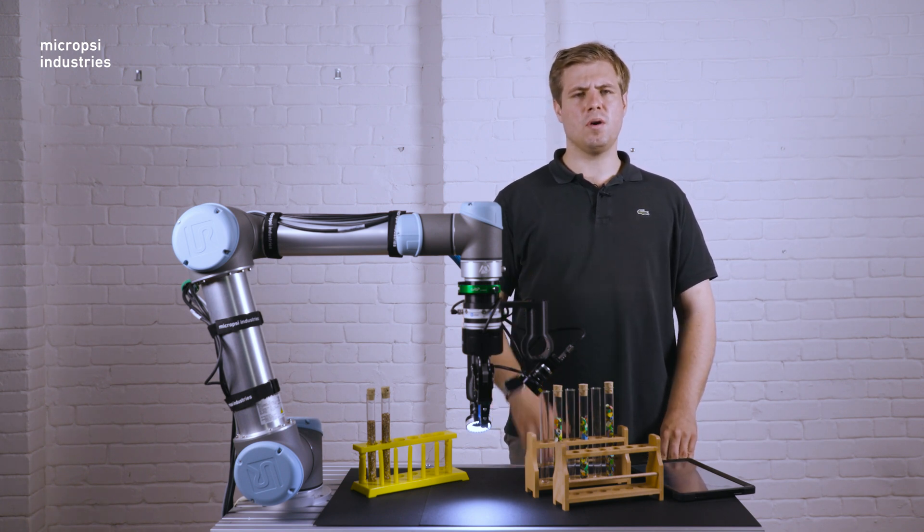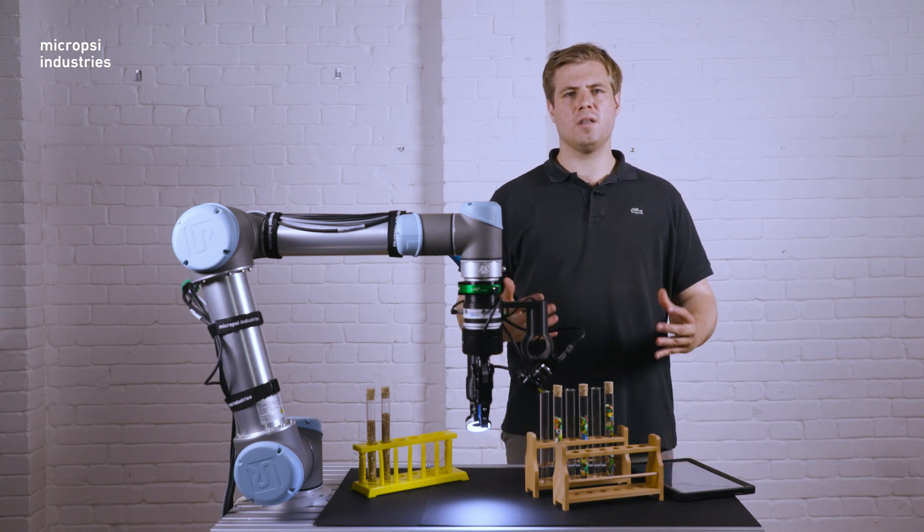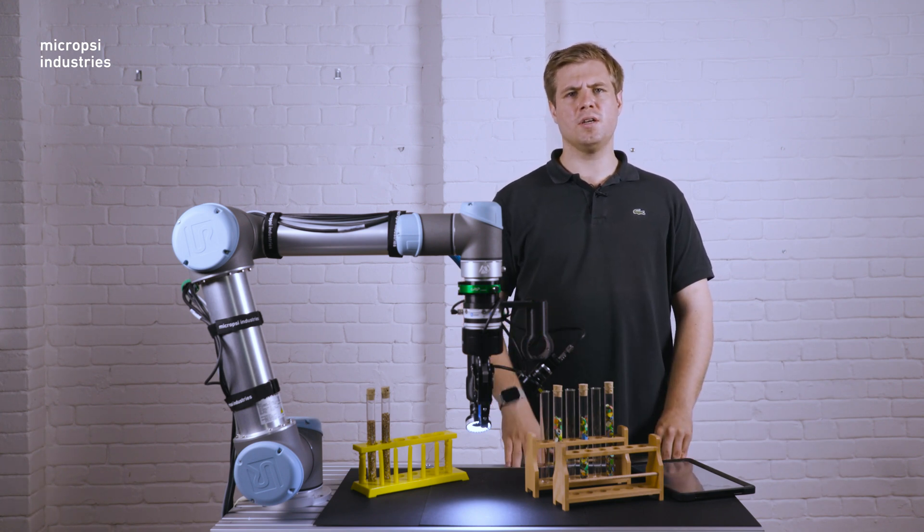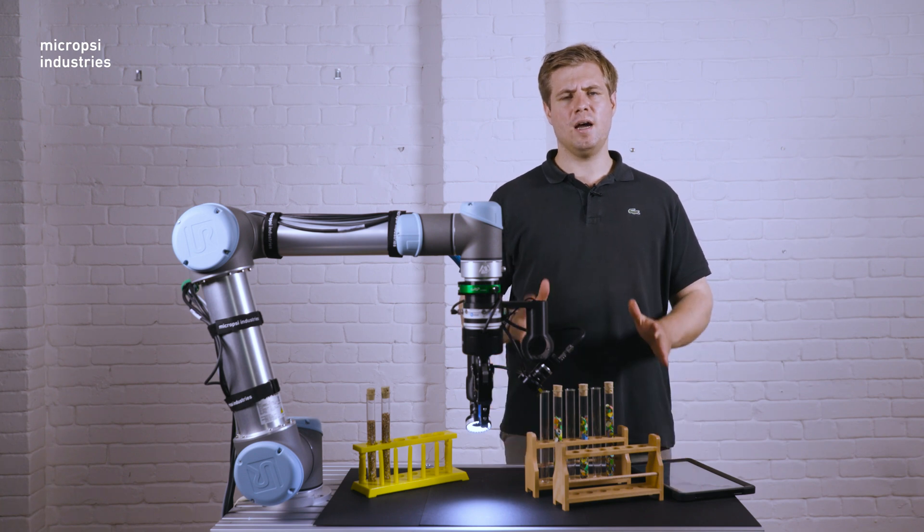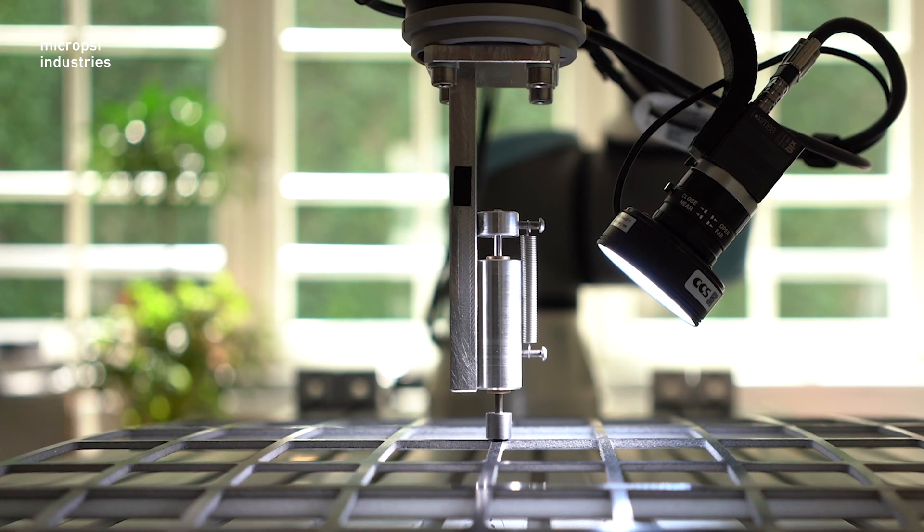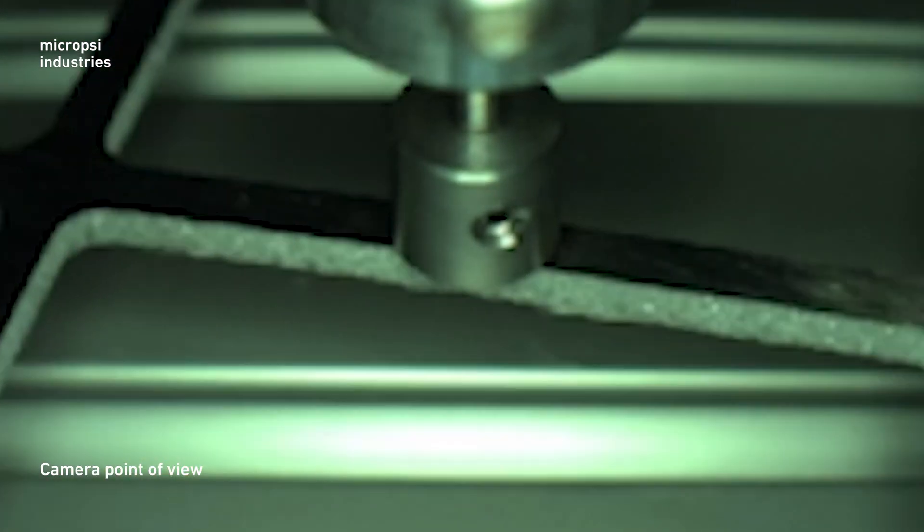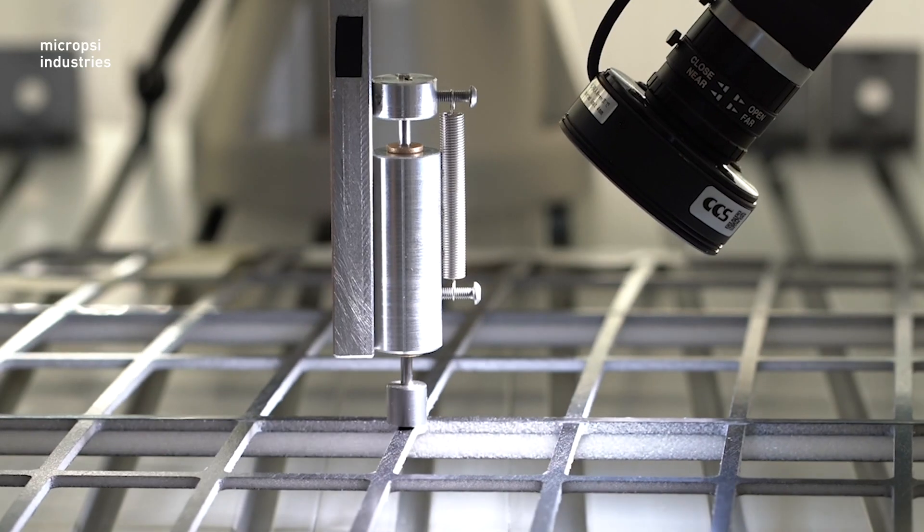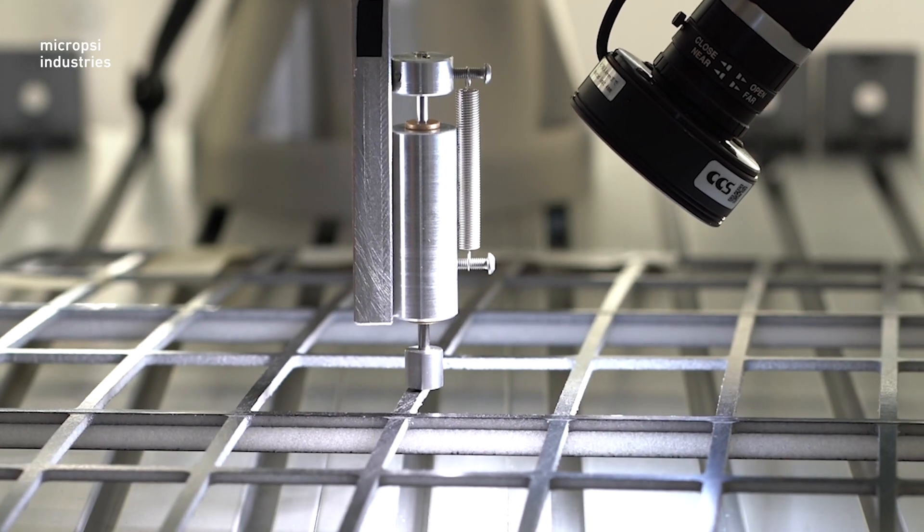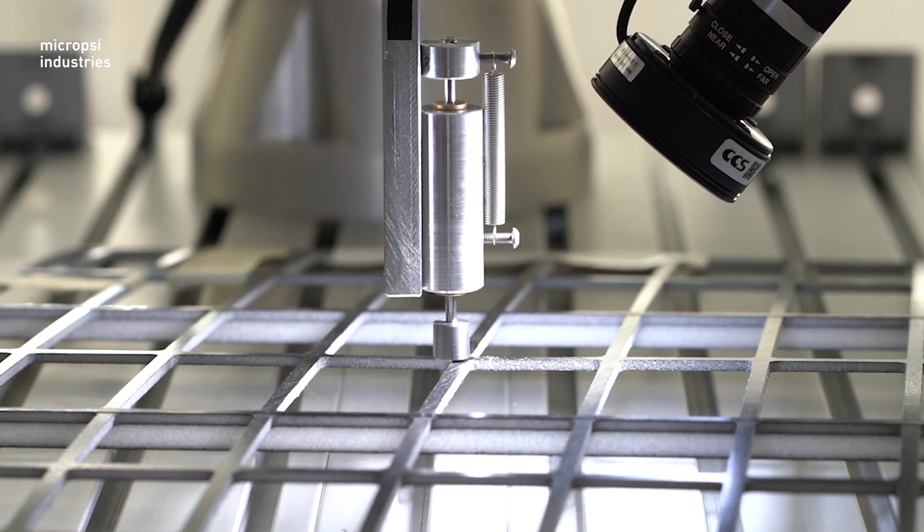You attach the Mirai controller to a robot. It augments that robot with artificial intelligence, giving it hand-eye coordination. Mirai enables a robot to perceive its workspace through a camera and then, in real-time, correct its movements when it comes across unpredictable situations.